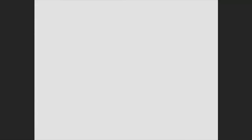Where do copy cataloging records come from and how do you get them? There are several ways to find records. OCLC, which stands for Online Computer Library Center, is a global library cooperative. You can join OCLC but it's not cheap, and that is a problem for smaller libraries. One of the services they provide is WorldCat, which is a huge database of bibliographic records from libraries around the world. The database currently contains over 521 million records and is growing quickly, so the chances are your item will be there.